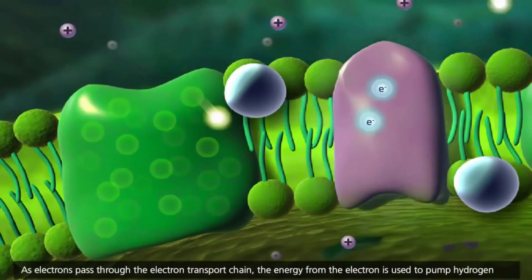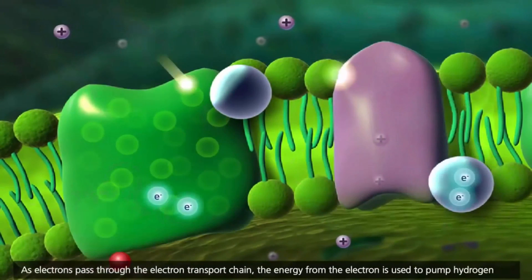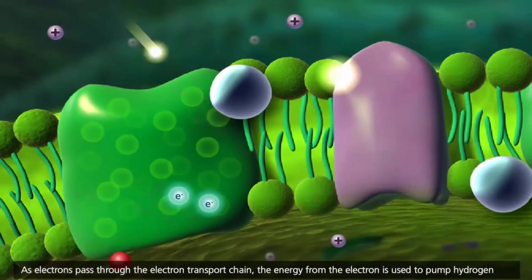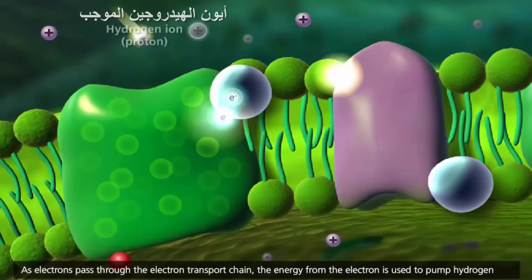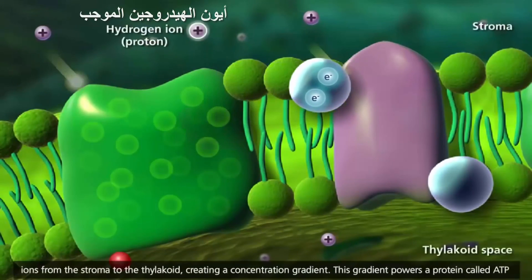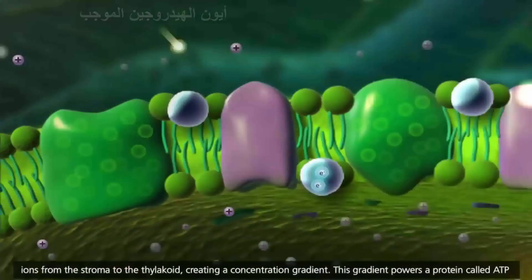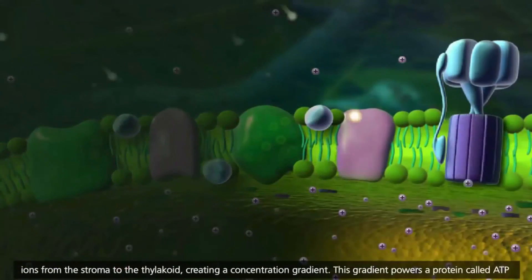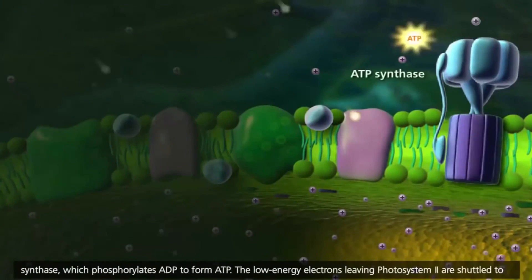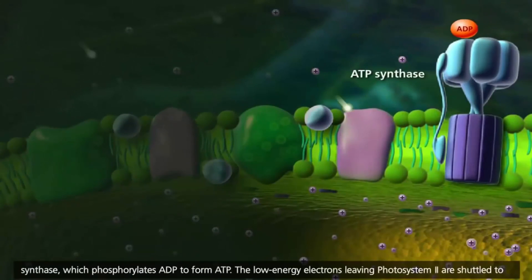As electrons pass through the electron-transport chain, the energy from the electron is used to pump hydrogen ions from the stroma to the thylakoid, creating a concentration gradient. This gradient powers a protein called ATP synthase, which phosphorylates ADP to form ATP.